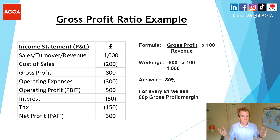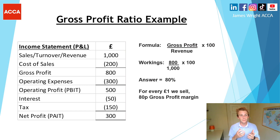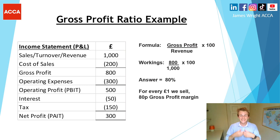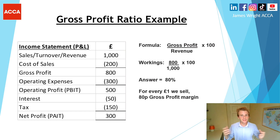This is the income statement, also known as the P&L, and as you can see on screen we've got a working example. You can see the gross profit of 800 divided by the revenue of 1,000. Be careful — there are different words that mean the same thing in your examination, such as sales, turnover, or revenue. The gross profit margin covers just the top part of the income statement, meaning for every £1 of sales, 80 pence relates to gross profit — that's the 80% margin.